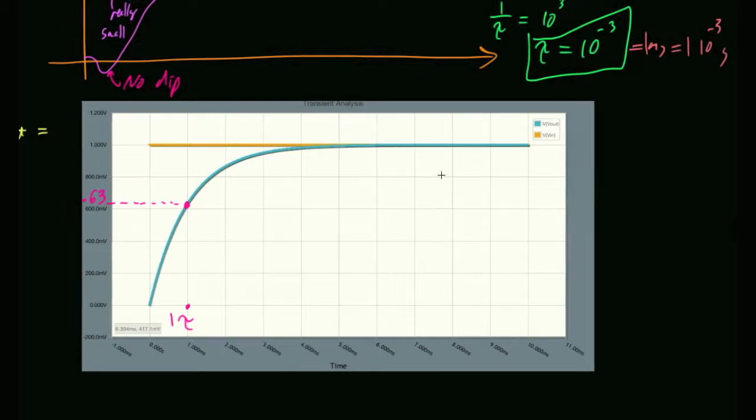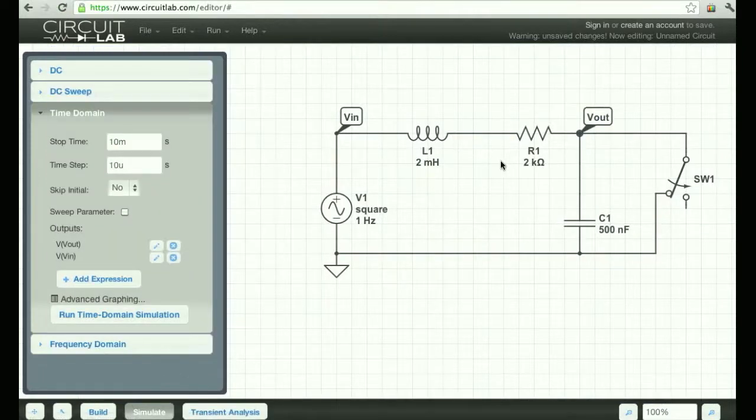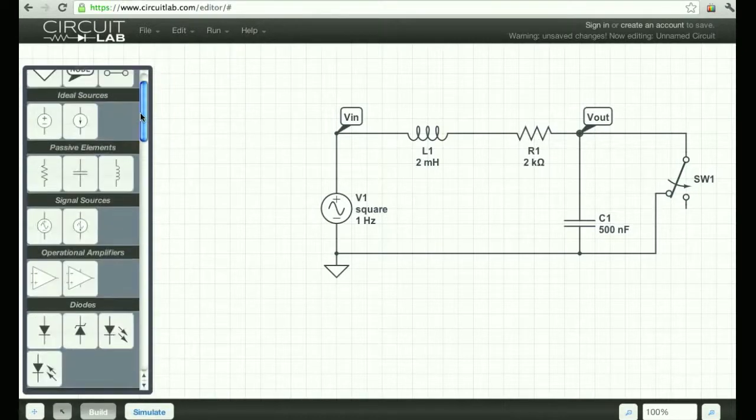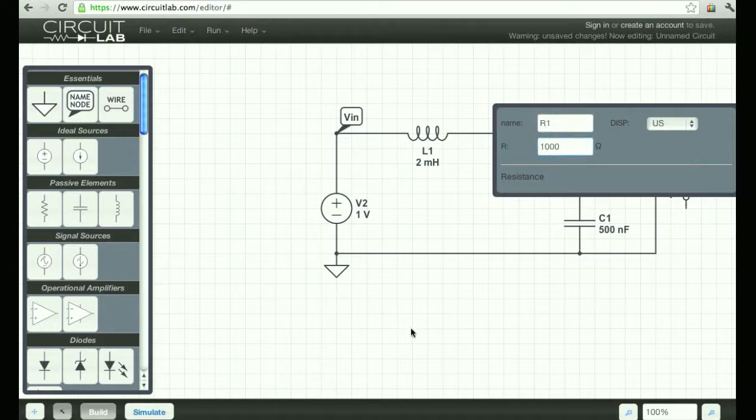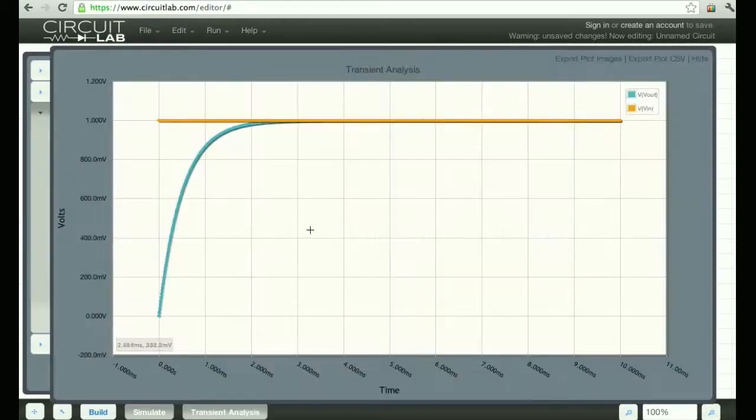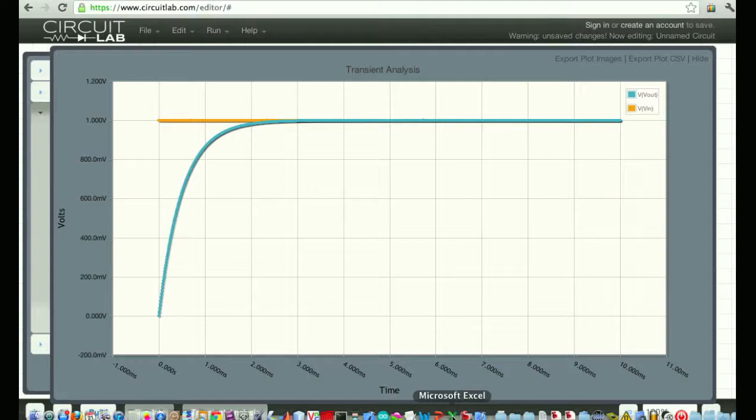After one time constant, am I 63% of the way to my final value? My final value is 1. My initial value is 0. 63% of the way there would be 0.63 volts. Here's one millisecond. Am I at 0.63 volts? I'm pretty close. So that's good. I have pretty good confidence that the circuit simulator is giving me roughly what I predict. Not even roughly, like exactly. What do you think? Cool. So this circuit is boring. Let's make it more interesting. So what I'm going to do now is I'm going to keep everything the same, but I'm going to just change my resistor a little bit. You with me? So input staying the same, inductor is the same, capacitor is the same. I am, however, going to make this resistor maybe like a thousand ohms. Should we try that?